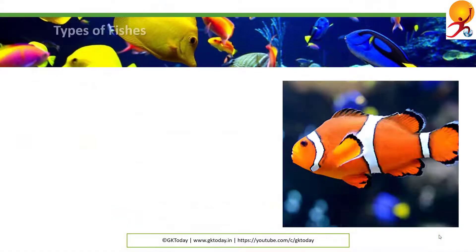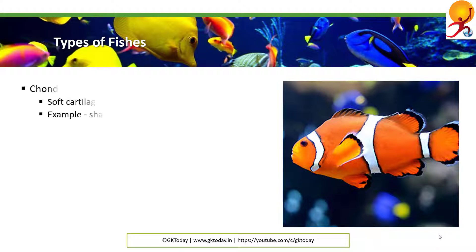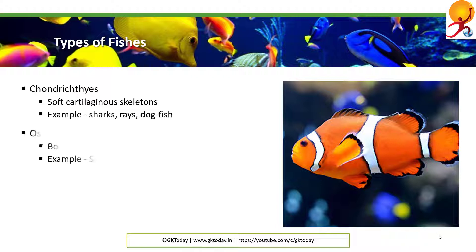We first look into different types of Pisces. All the fishes have been classified into two main classes as follows. Chondrichthyes: these are fishes with soft cartilage skeletons. Examples would be sharks, rays, dogfish, skates, and sturgeons.